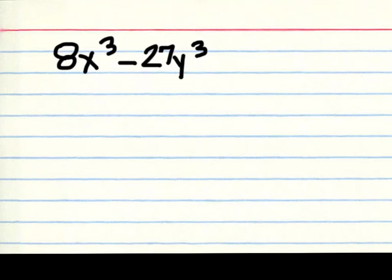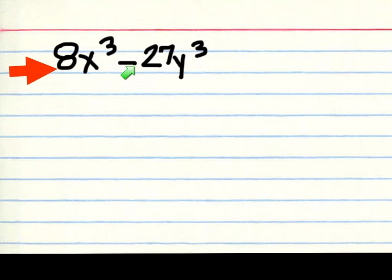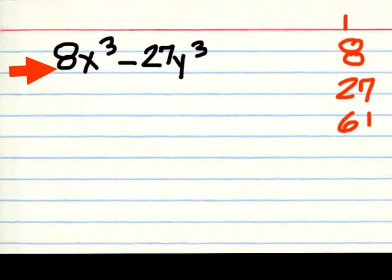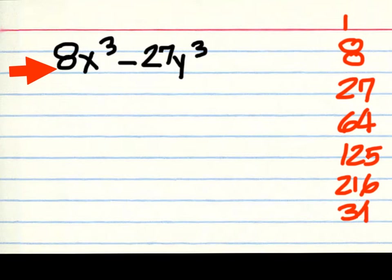On this problem we have two cubes, and we know that because 8 is a perfect cube, x to the third is a perfect cube, we have a minus sign, 27 is a perfect cube, and y to the third is a perfect cube. If you don't know the perfect cubes, write these down: 1, 8, 27, 64, 125, 216, 343. If you can go up that high, you'll be doing well.